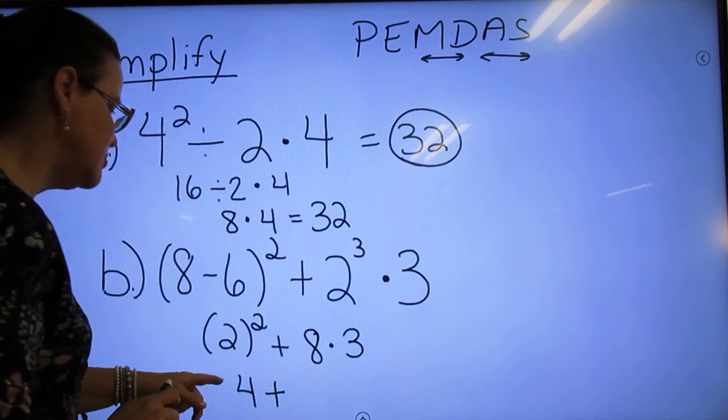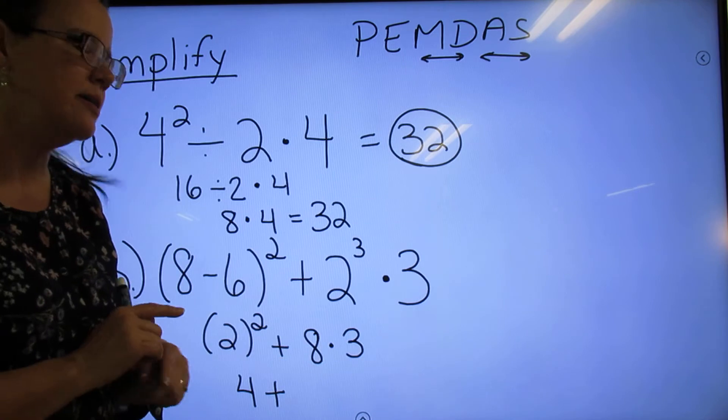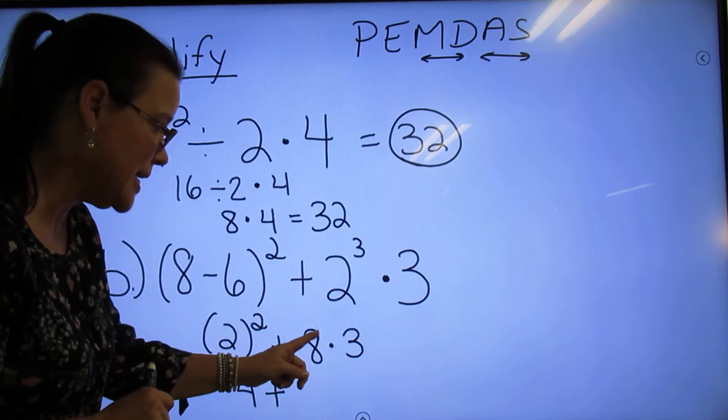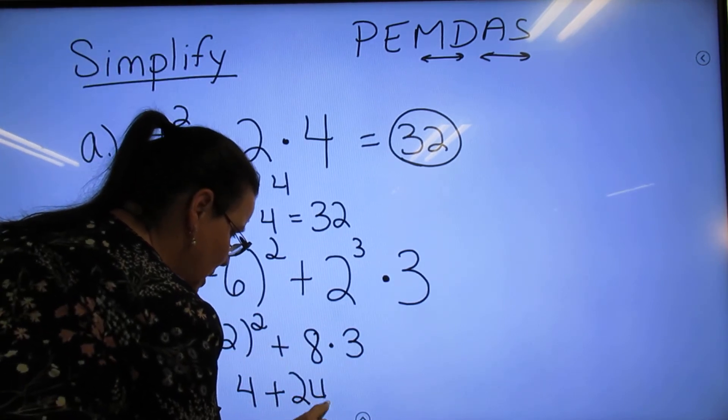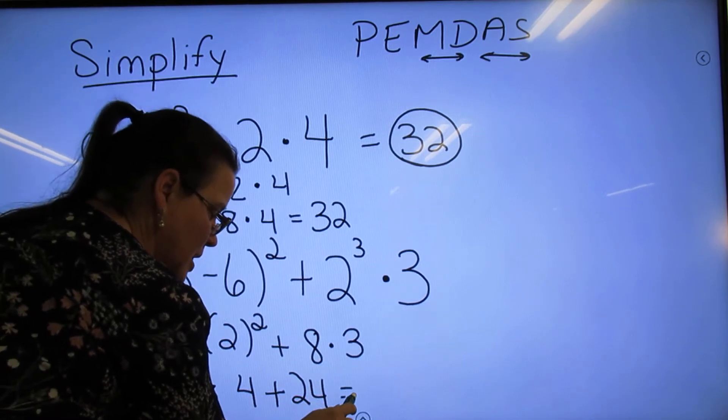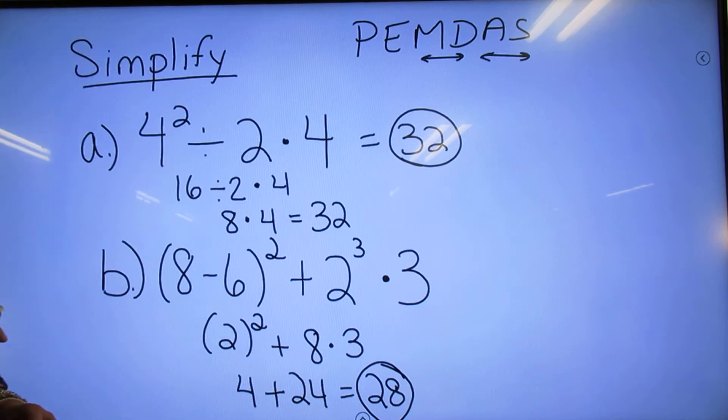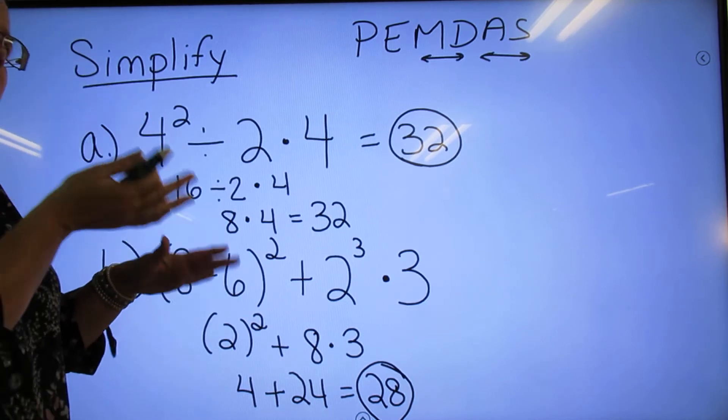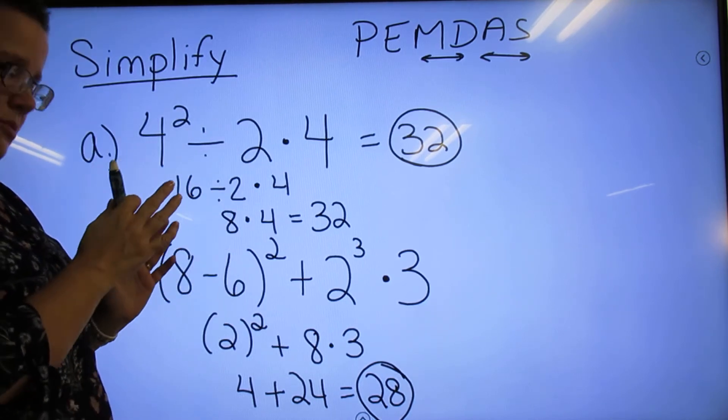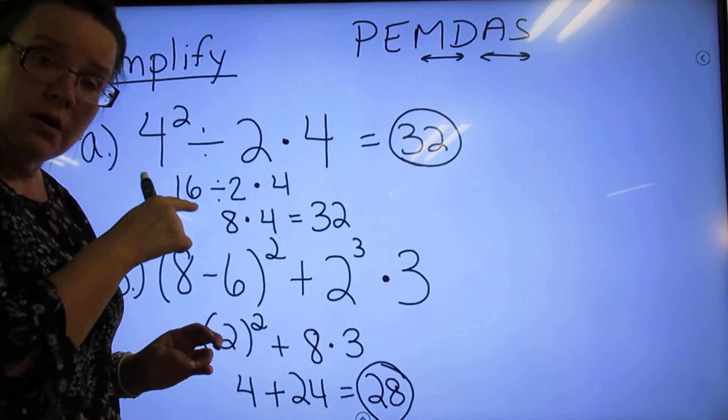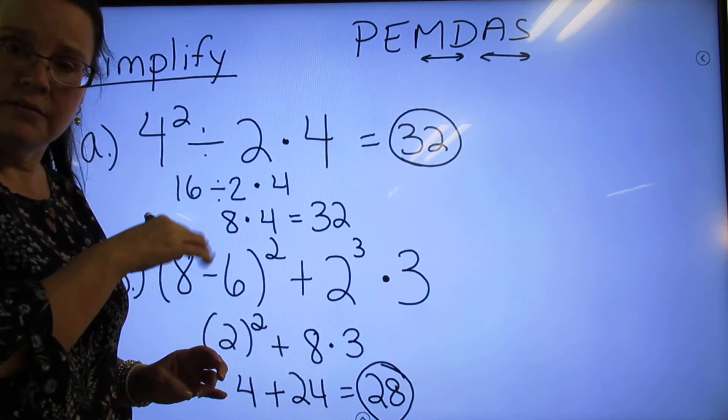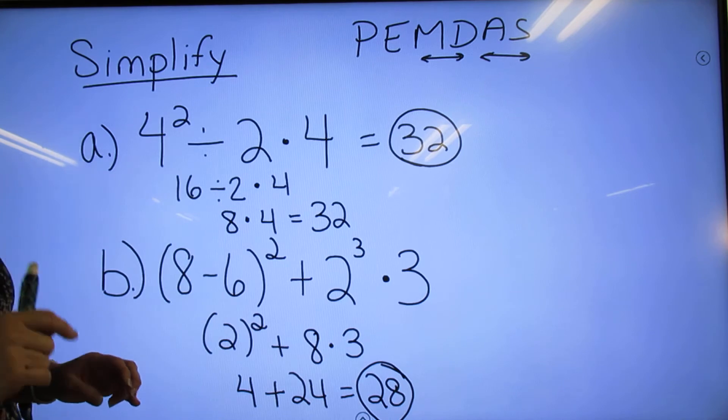Now you have 2 squared, which is 4, plus—now, don't do 4+8×3. No, no, no. You're going to do 8×3 is 24, and 24+4 is going to be 28. And that is how you would do that. Now, if you need to go back and look at this, you have that opportunity to rewind and do it slowly.